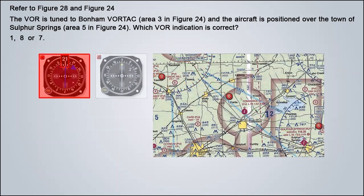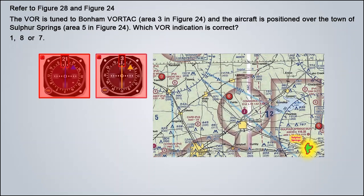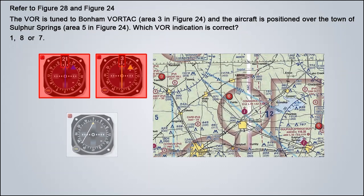Now let's do the same with VOR number 8. First, we look at the flag, which again points straight up. In this case, the needle is actually centered. Therefore, the number to fly directly to the station is found straight up from the middle of the instrument — that number is 030, a north-north-east setting to go to the station, so a south-south-west position from it. Again, Sulphur Springs is located east-south-east of that station, not south-south-west. So VOR number 8 is also excluded, leaving only VOR number 7 as the correct one.